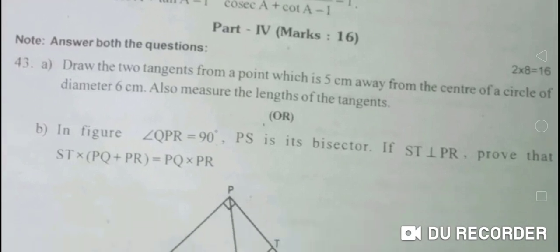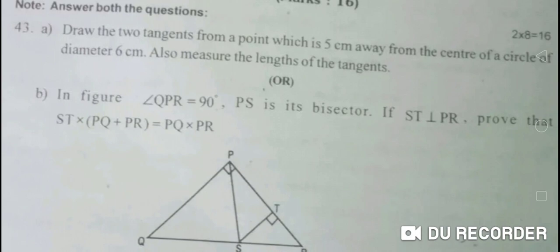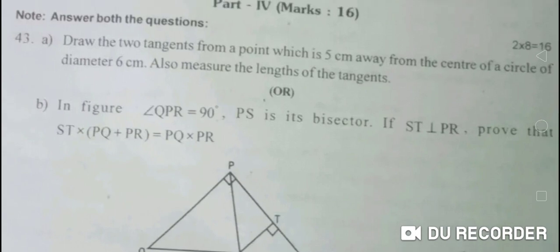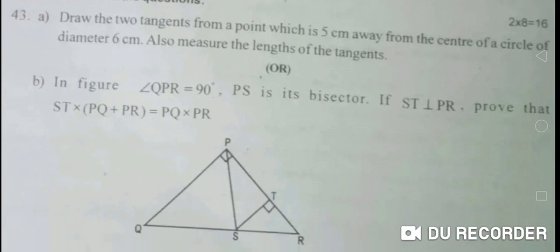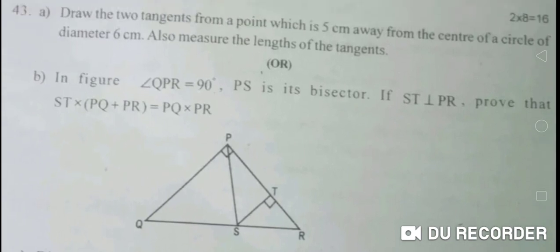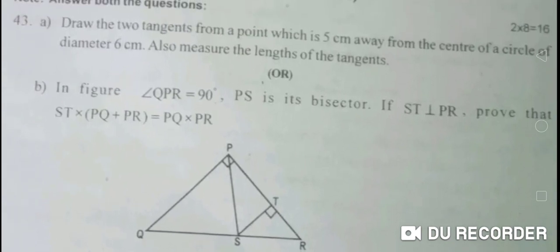First, there is geometry. For example, in question number 43, option A or option B, there are two points. If you choose geometry, option A is one point and option B is one point. If you choose two points, you can get 16 marks.